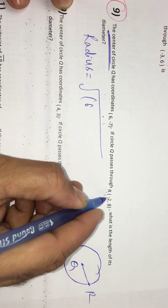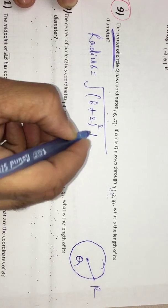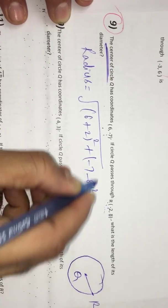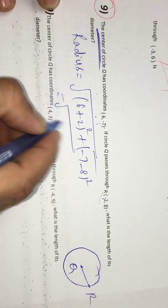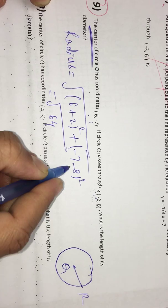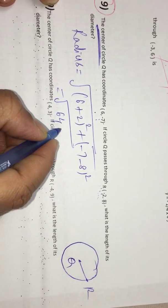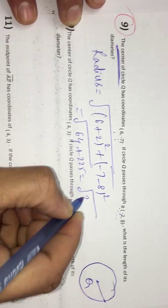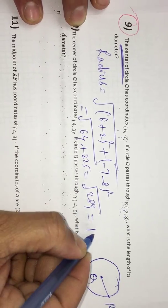6 minus of minus 2, which is plus 2, and negative 7 minus 8 square. Then what I get? 8 square is 64. Negative 7, negative 8 is 15. Negative 15 square is positive 225. I get root of 289. On calculator, I get 17.